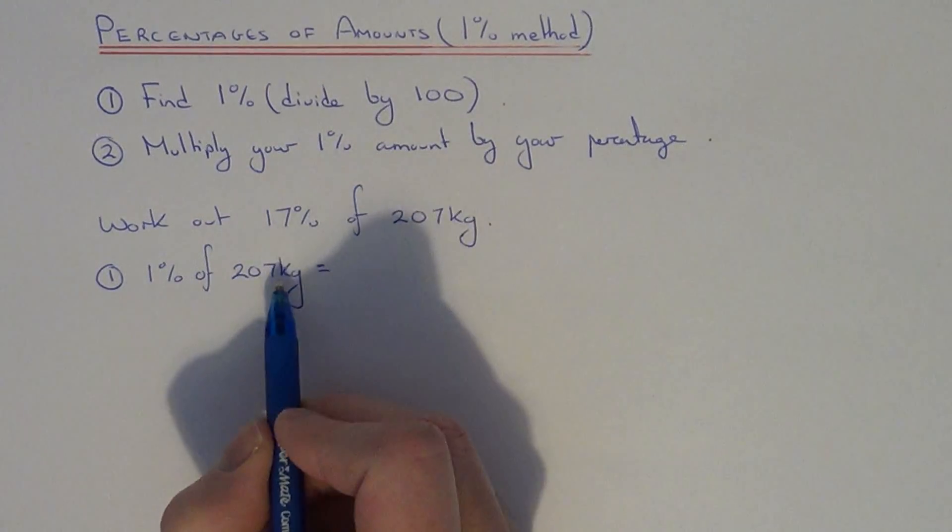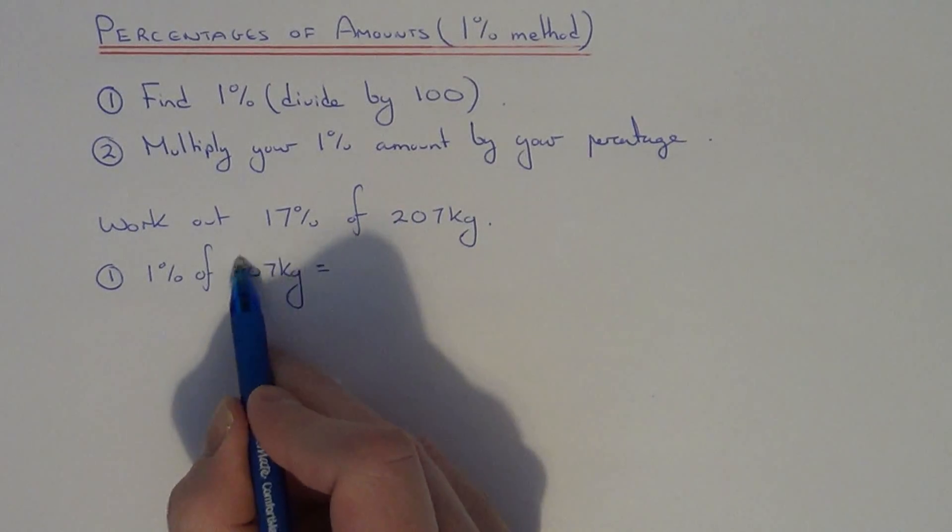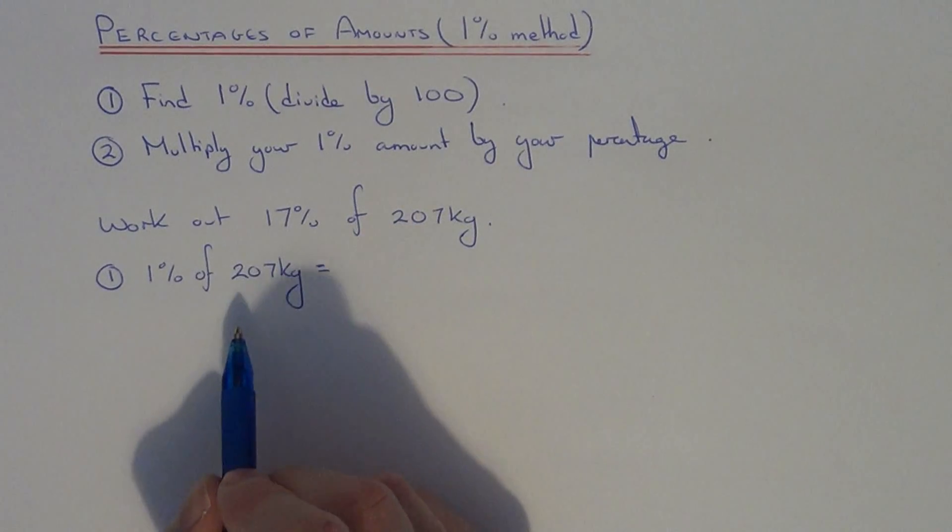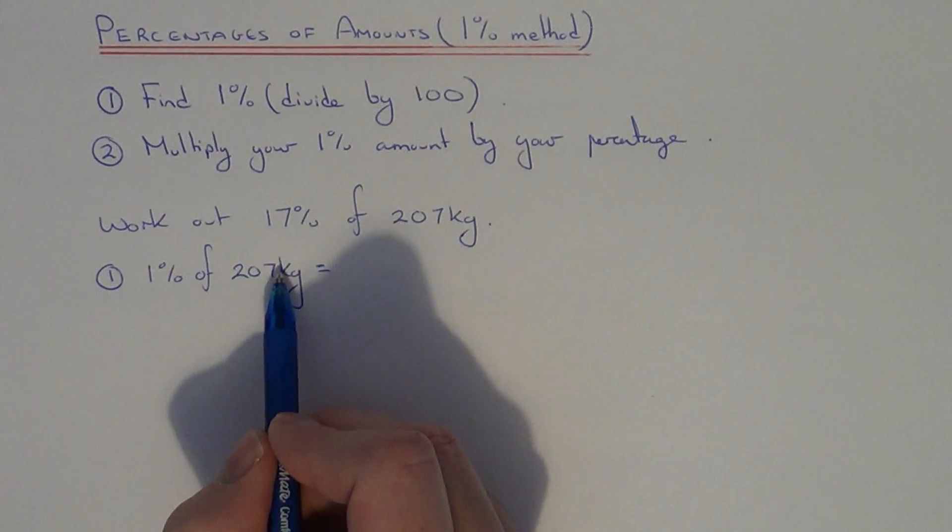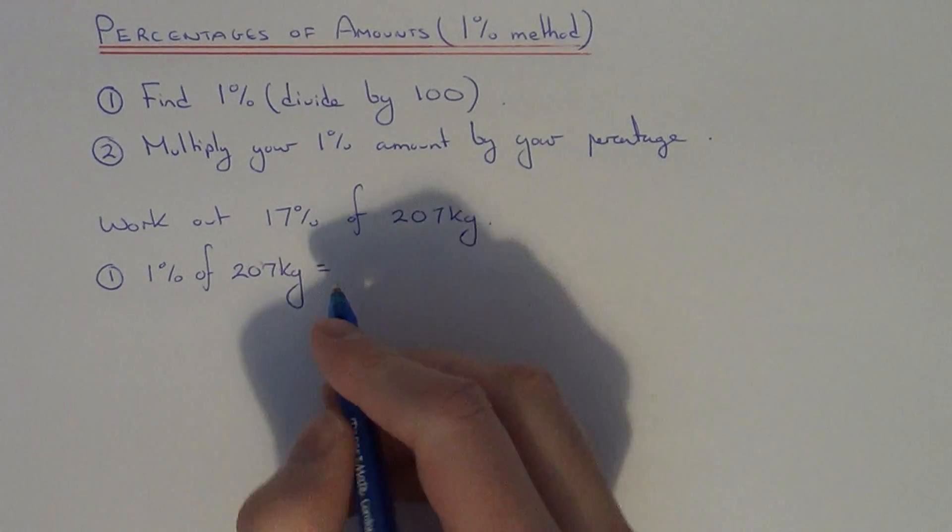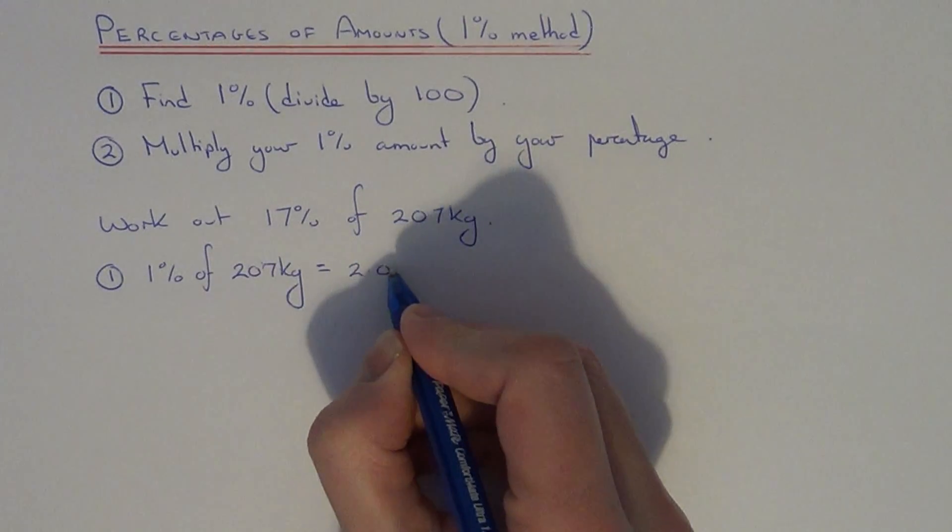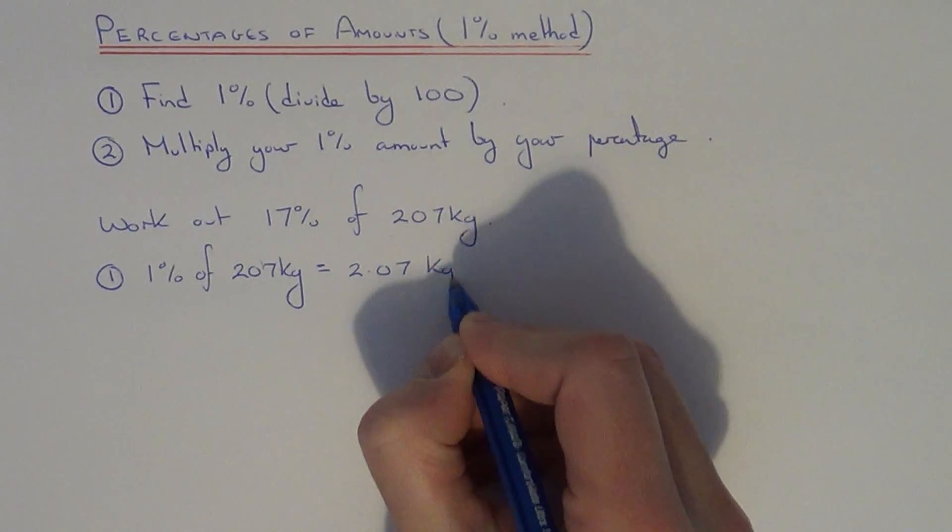To get 1%, all you need to do is divide 207 by 100. A quick way to do this is just move the decimal point in from the end two places, which gives us 2.07kg.